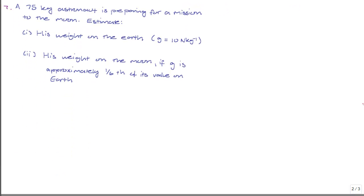Question 2 says, a 75 kilogram astronaut is preparing for a mission to the Moon. Estimate his weight on the Earth, where g is equal to 10 Newtons per kilogram, and his weight on the Moon, if g is approximately one-sixth of its value on Earth.